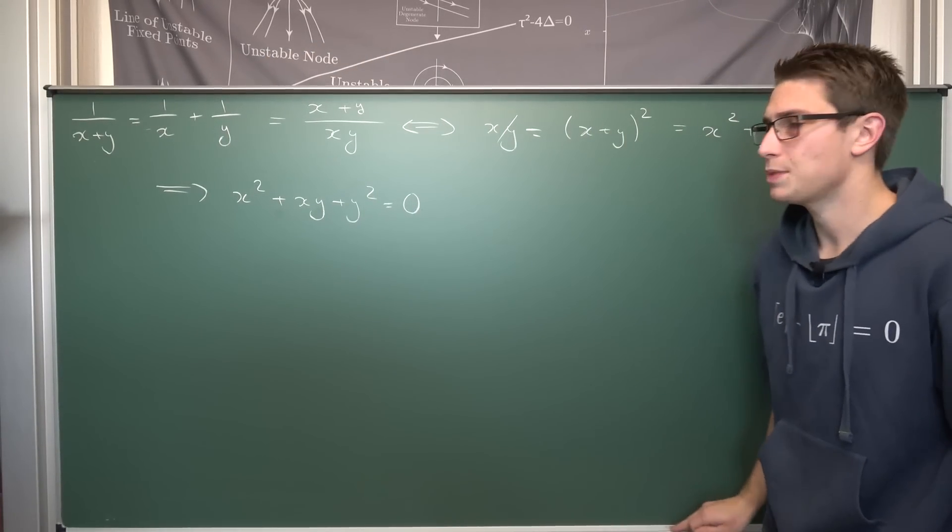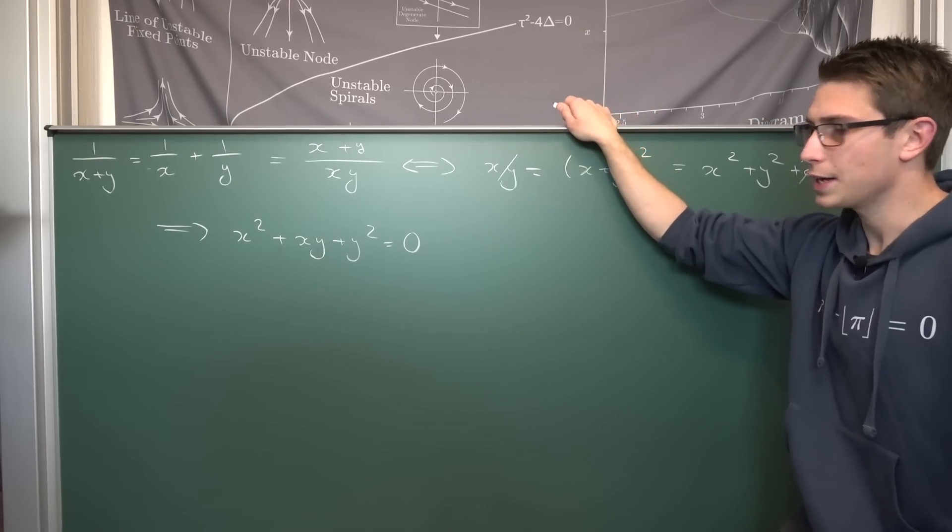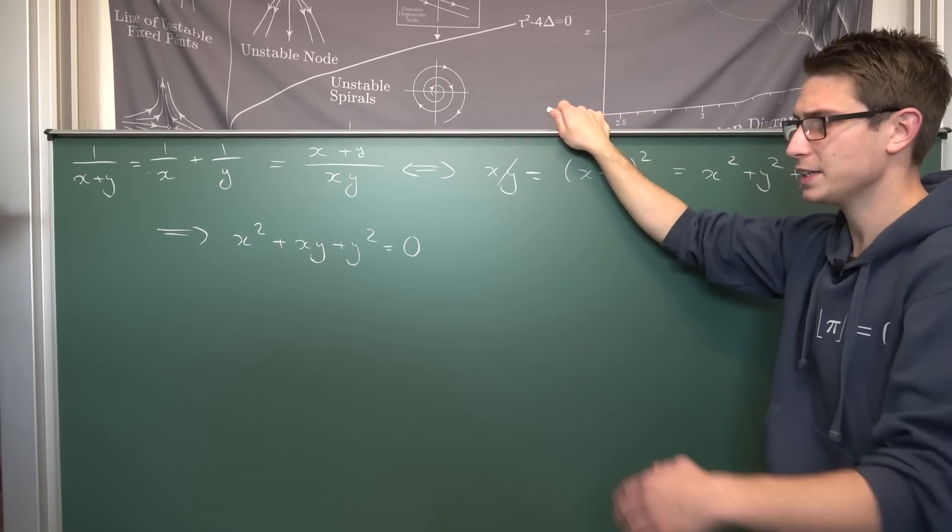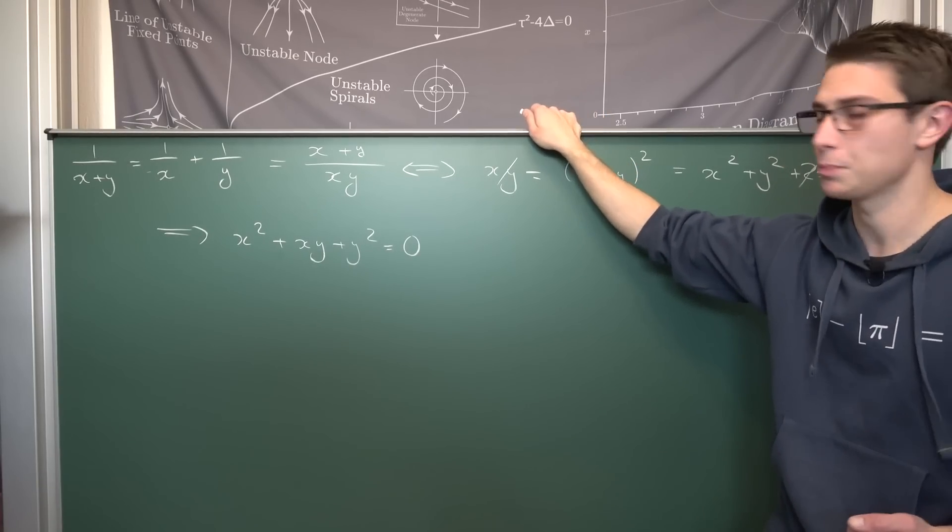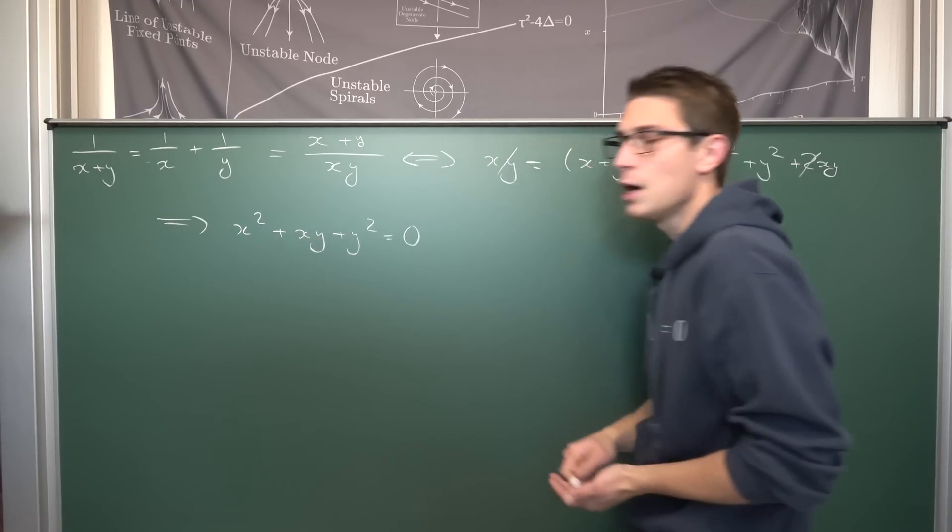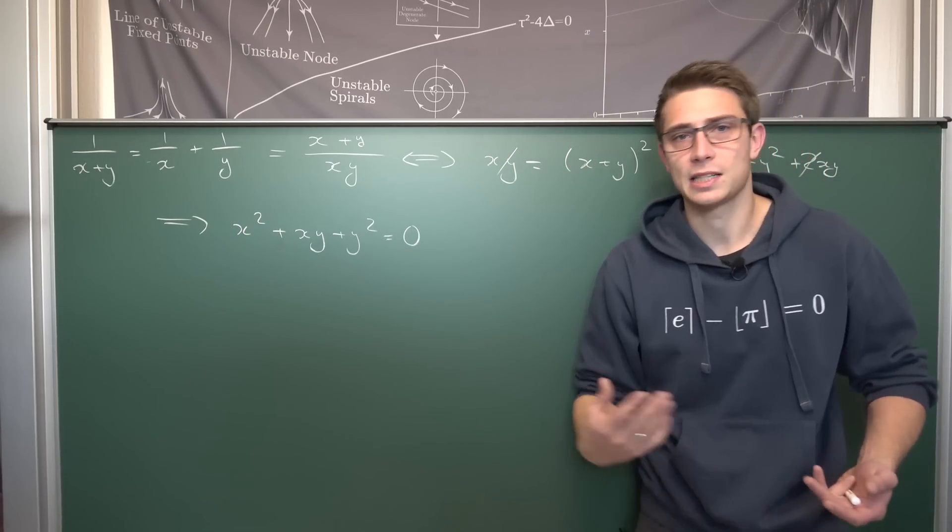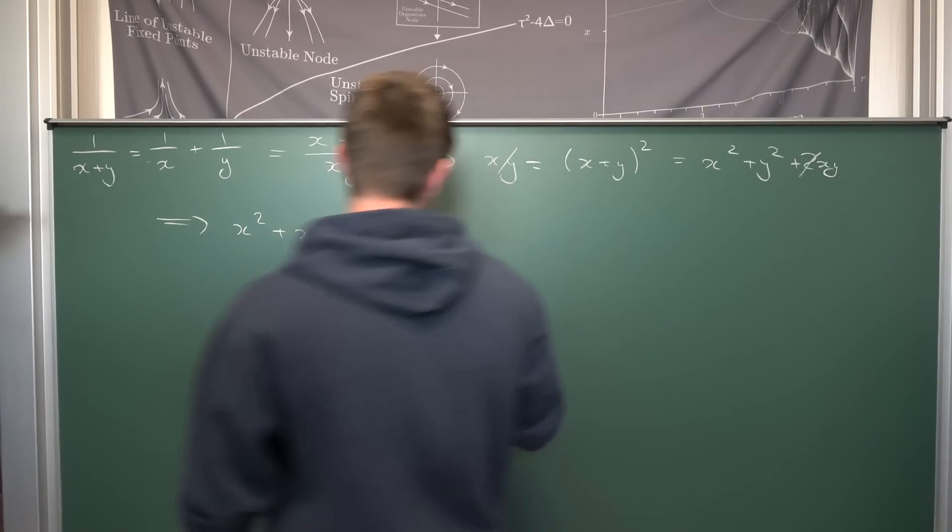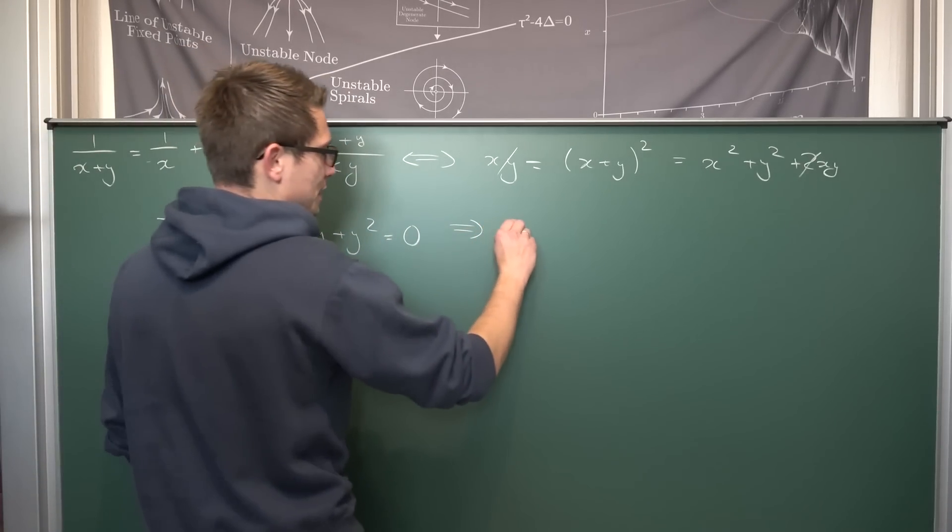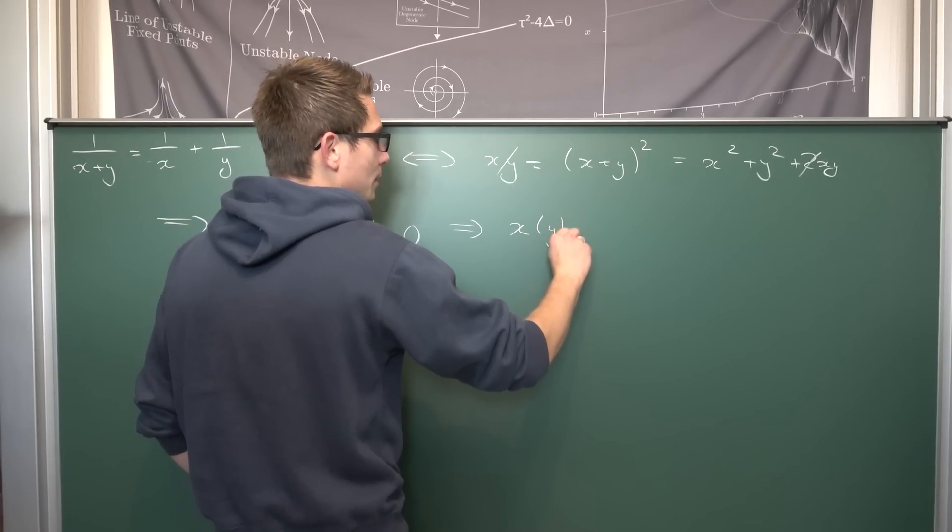And this right here is basically just a quadratic that we can now very easily solve with respect to one variable. Making an implicit function out of it basically. I sorted it such that we are going to solve for x right now. But you can also solve for y. This really doesn't make a difference whatsoever.